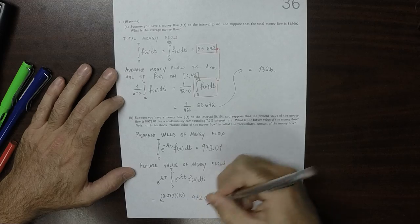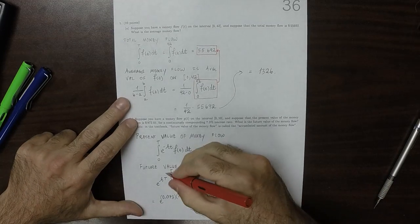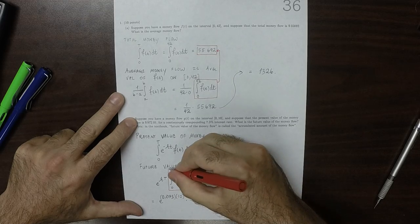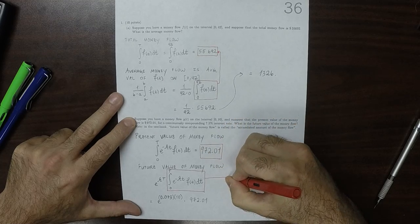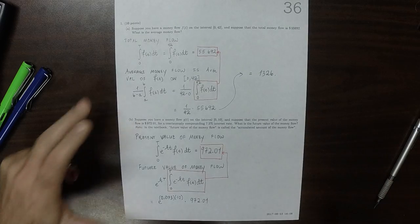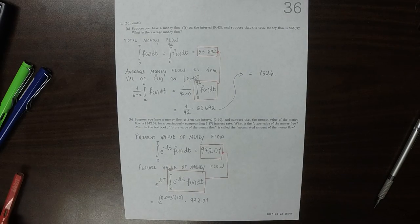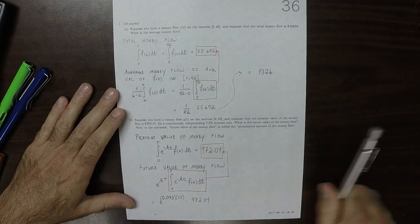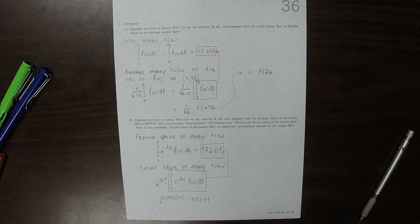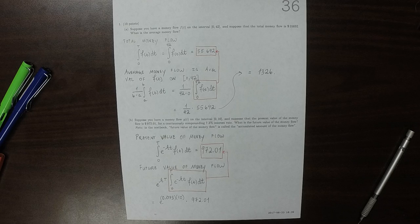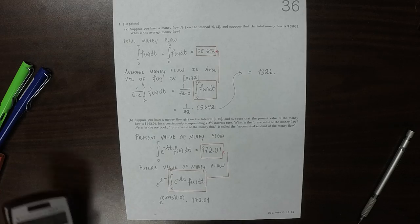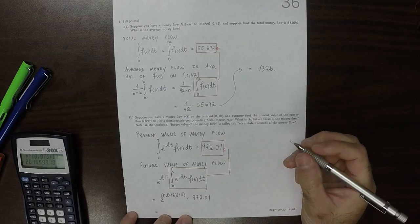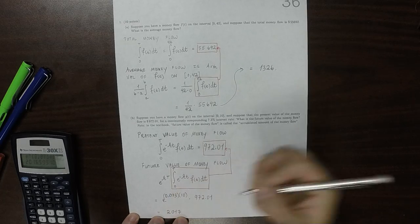Which is to say that this value is this value, and R is 7.3%. So plugging that into the calculator. Exponential 0.073 times 10 times 972.01. That is 2017 to the nearest dollar.